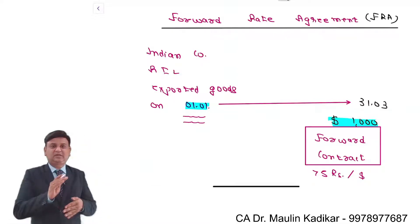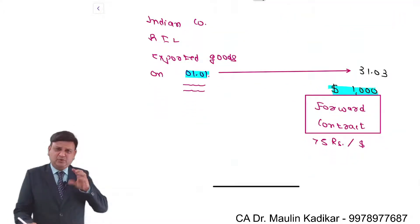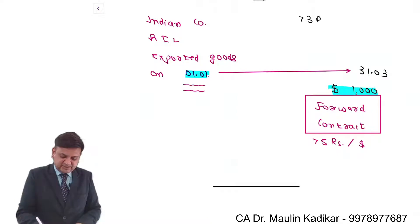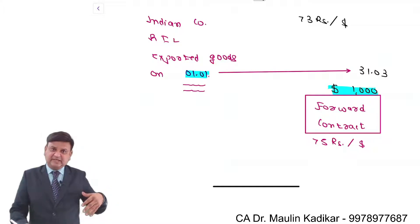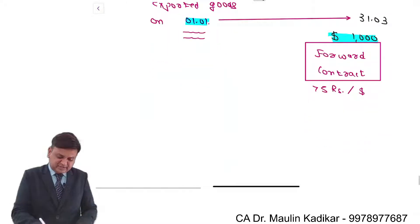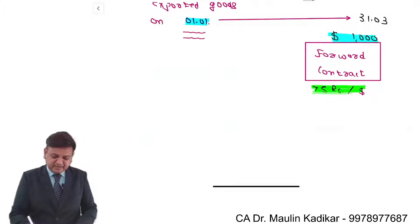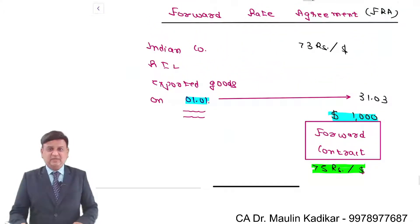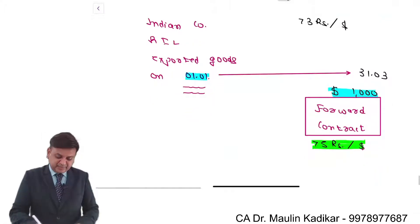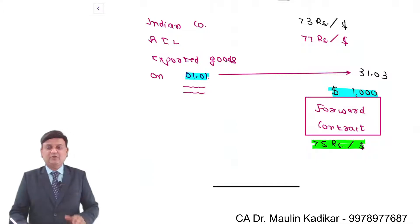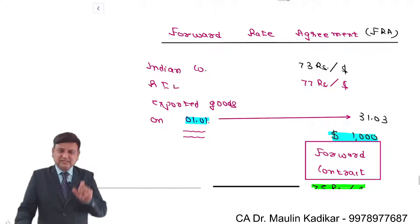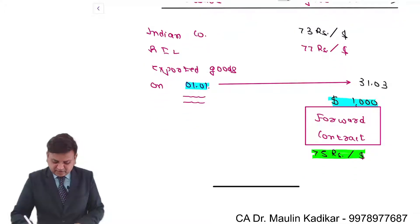And this forward contract is entered upon. Then what will happen? On 31st of March, suppose the spot exchange rate is 73 rupees per dollar — even in that case the Reliance company will receive 75 rupees. Suppose the spot exchange rate is 70 rupees per dollar — even then the company will receive 75 rupees per dollar. Whatever forward exchange rate the bank has committed, that is the rate at which conversion will take place. If the spot rate is 77 rupees per dollar, you still receive 75 rupees per dollar. Whether the rate is more or less, you receive a fixed amount — 75. This is called entering into a forward contract for the purpose of hedging.